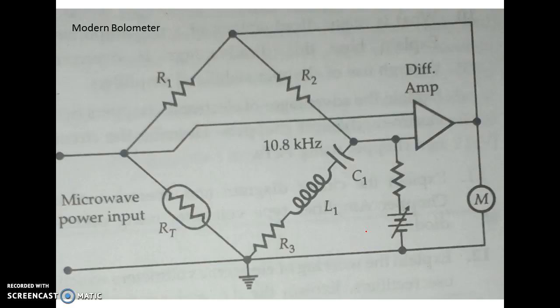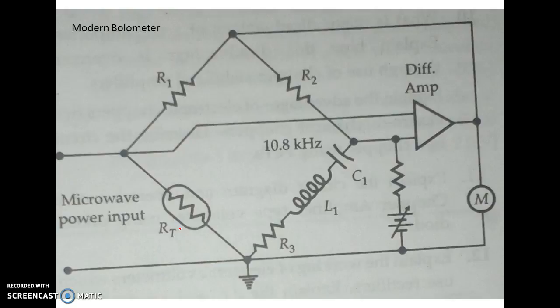To sum up: for low power measurements less than 10 milliwatts, you can use voltmeters. For powers in the range of 10 milliwatts to 10 watts, you can use the comparison or flow calorimeter. For powers greater than 10 watts, you can use the calorimeter power meters. This covers all the power measurement methods at RF frequencies.